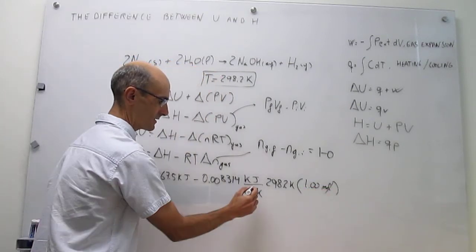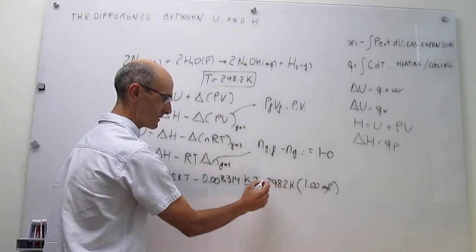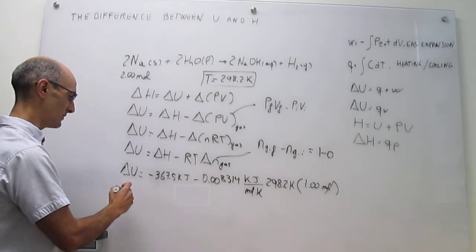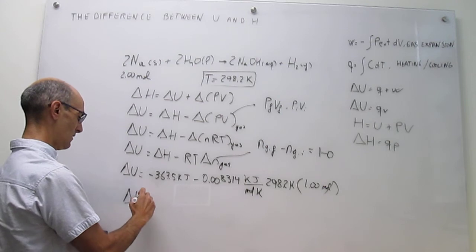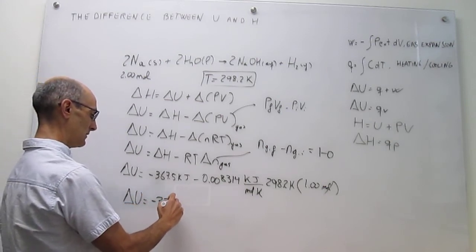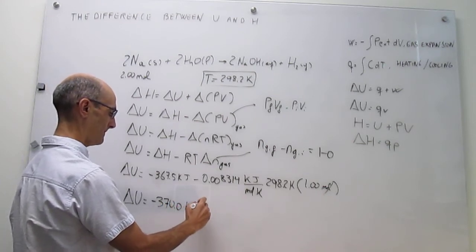We can now cancel this mole unit. The Kelvin unit also cancels. The only thing left over is my kilojoules energy unit. So this delta U, when you do that, is going to be minus 370.0 kilojoules. And that is your answer.